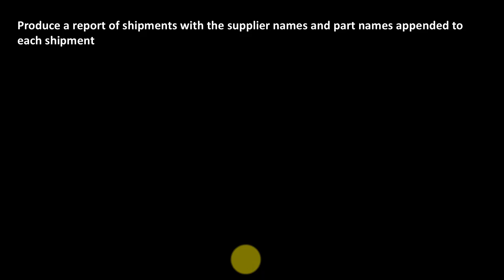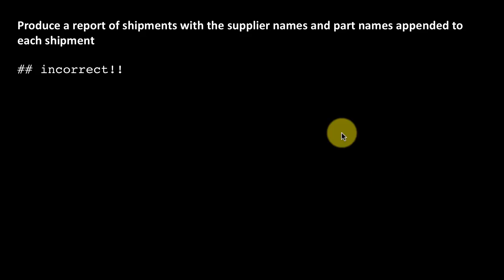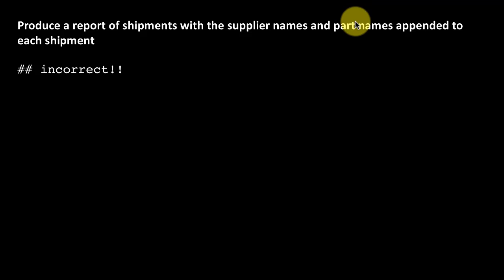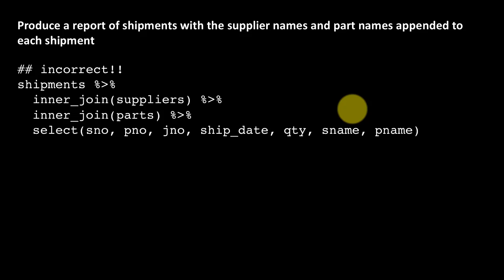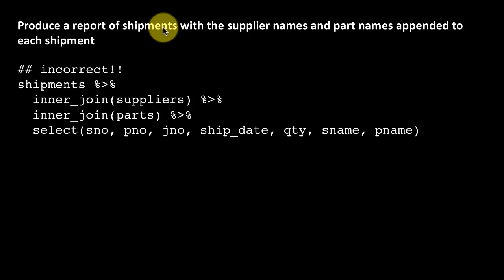Let's take another example: produce a report of shipments with supplier names and part names appended. We need to join shipments, suppliers, and parts tibbles. First, let's look at an incorrect approach. If we say shipments inner join suppliers inner join parts and then select supplier number, part number, project number, ship date, quantity, etc., we notice a problem: the first join happens by supplier number, which is correct, but this creates a tibble with all columns from shipments and suppliers, including a city column from suppliers.